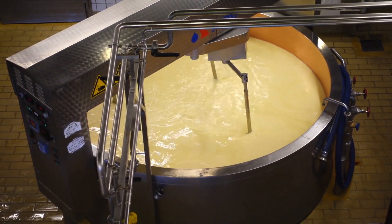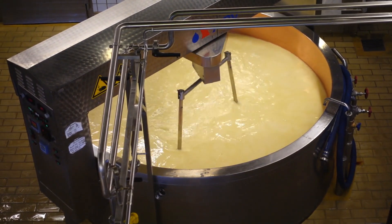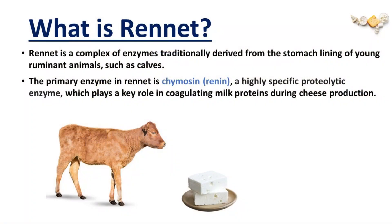So first, let's see what is rennet. Rennet is used for the coagulation of milk in the first stage of cheese production, and it is the mode of coagulation in the vast majority of the world's cheeses. It is induced by the enzyme chymosin, a highly specific proteolytic enzyme.